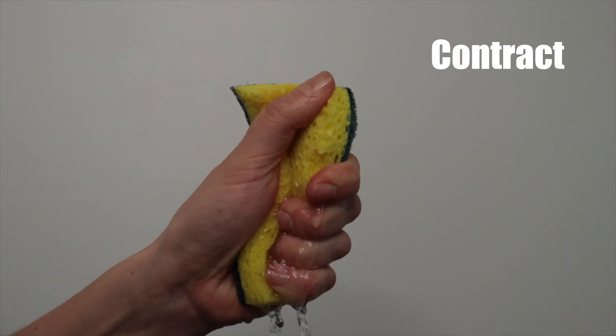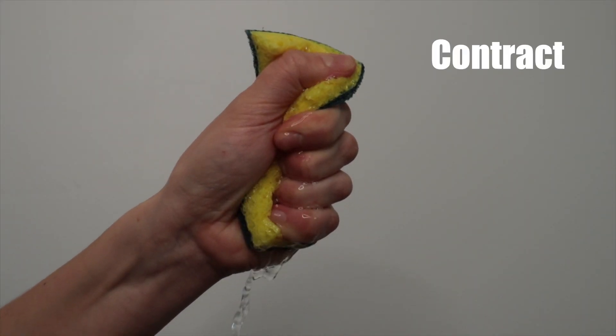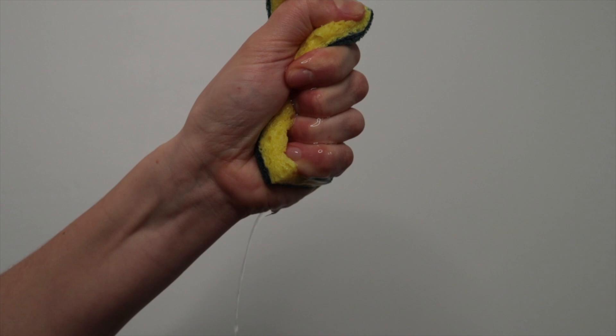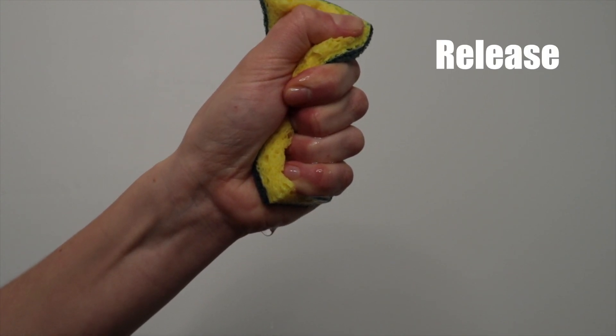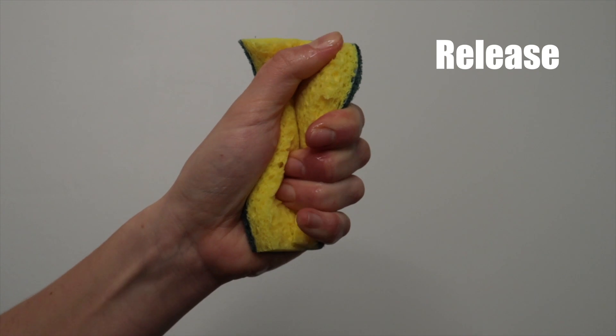The third cue is the sponge. So imagine that you have a sponge filled with water in your vagina. Now squeeze the water out of the sponge and try to lift it up at the same time. To release, let the sponge drop down in your pelvis and let it fill up with water and expand.